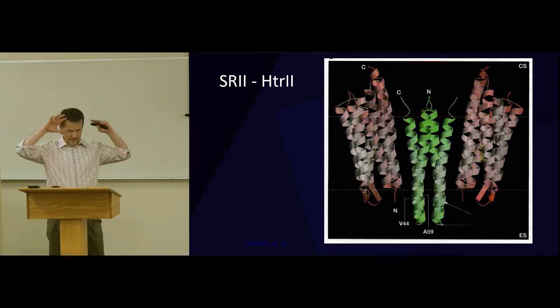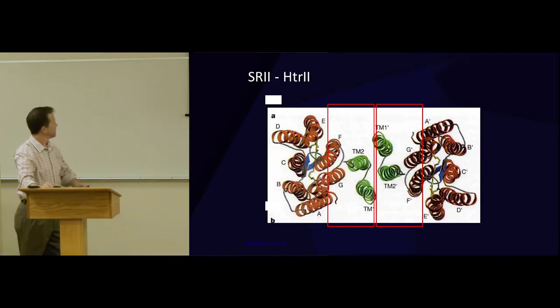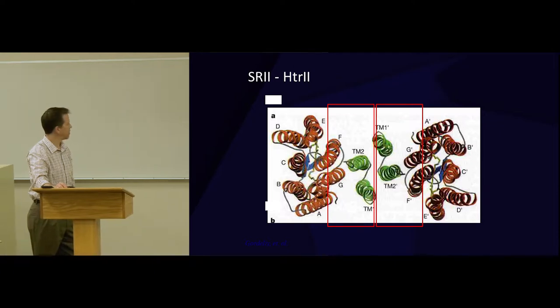If you look down, it looks like this. Sensory rhodopsin in red, HTR in green. So you have two pairs. Here's sensory rhodopsin and HTR. Here's another sensory rhodopsin and HTR. This little piece, labeled here TM2 of the HTR protein, is talking to this thing, these two right here, F and G, in sensory rhodopsin.